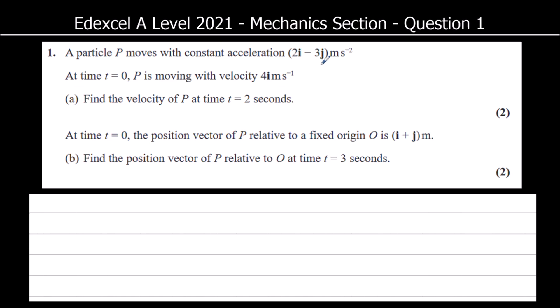So here we've got the acceleration. We've got the initial velocity at time t equals 0, that's the initial velocity. And we've got time is 2. So we're using SUVAT and we're going to find V.